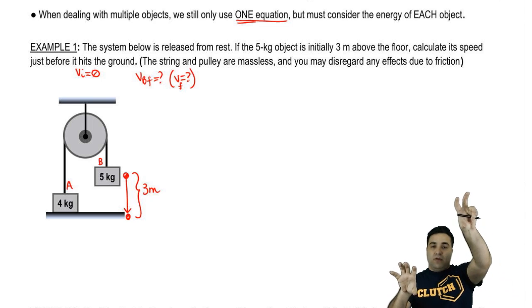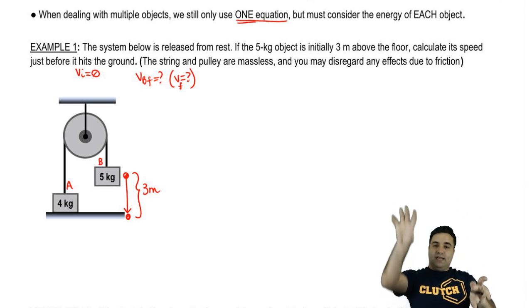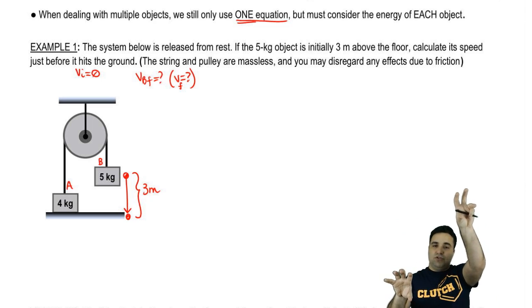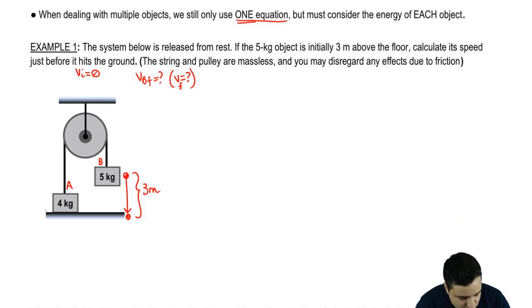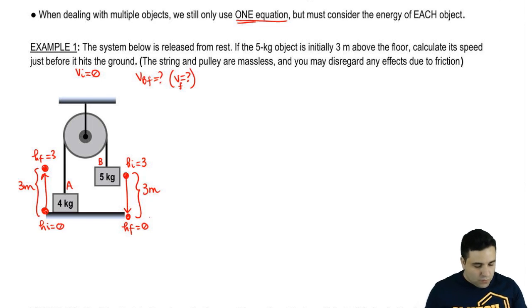Now, once the five kilogram drops three meters, this guy has to go up, and it's going to go up the same amount. If this drops three, this goes up three. So the block B starts here. So the initial height of block B is three. And the final height of block B is zero. And for block A, it's the opposite. The initial height starts here. So the initial height is zero. And the final height is three. So they basically swap places.